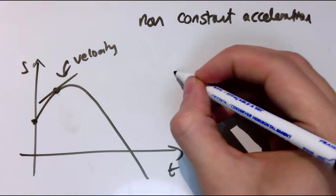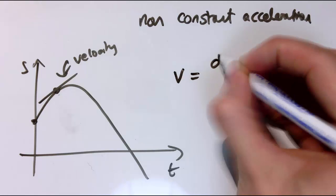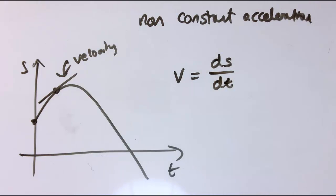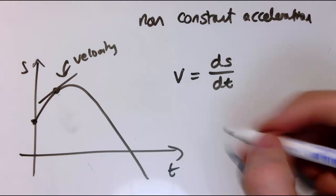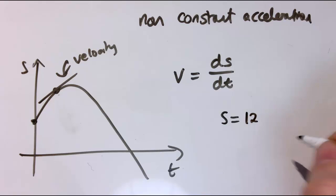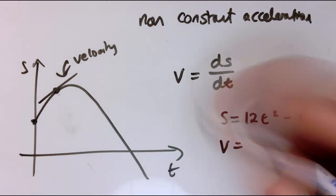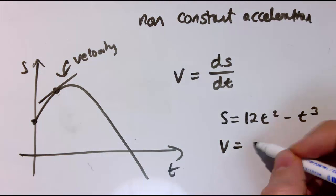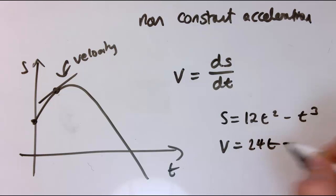So actually, the velocity is like a rate of change of displacement with time, and one way of expressing that is to say that V equals ds by dt. So if you haven't done differentiation, you need to go and learn about that before you can deal with this video. So let's say I've got a displacement of 12t squared minus t cubed.